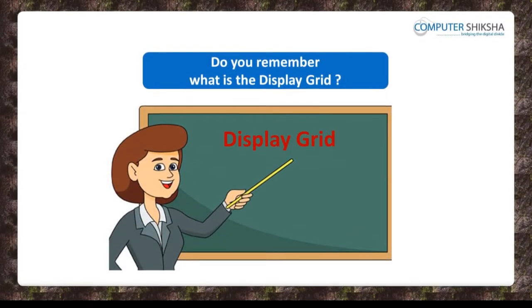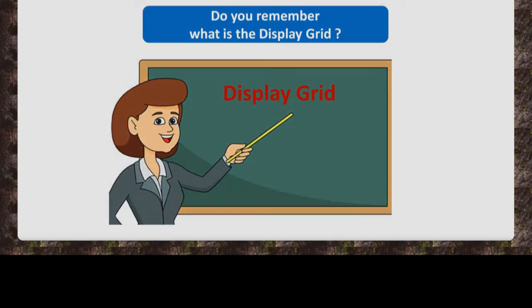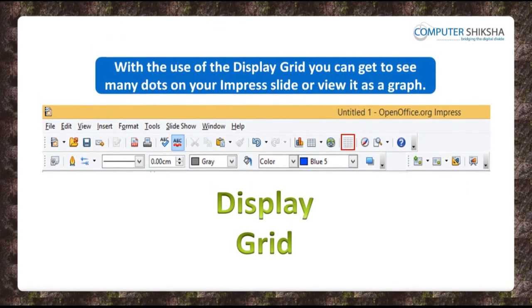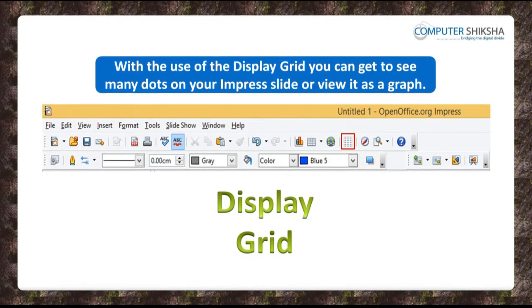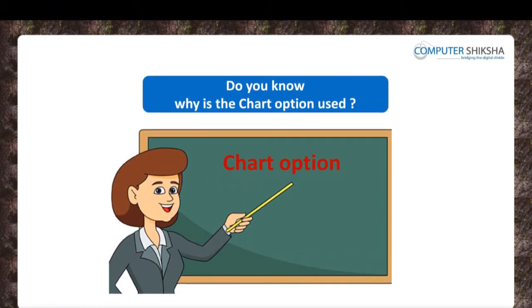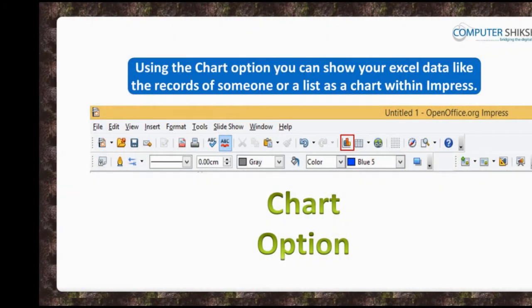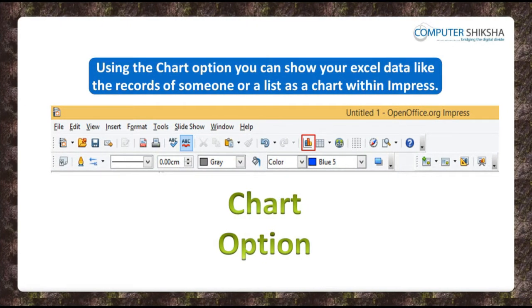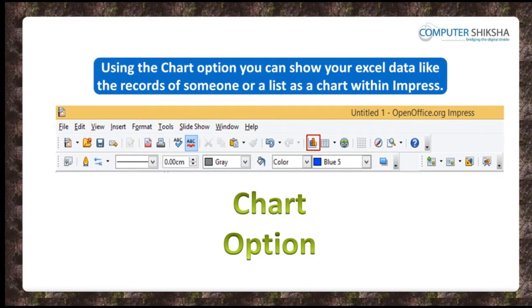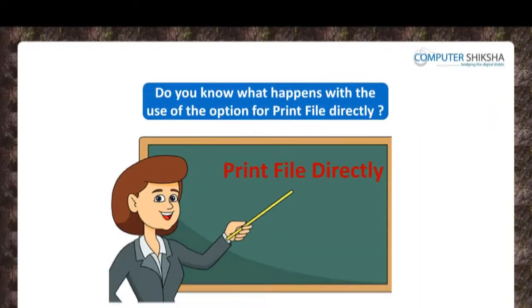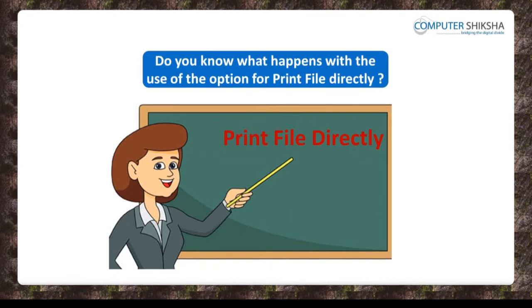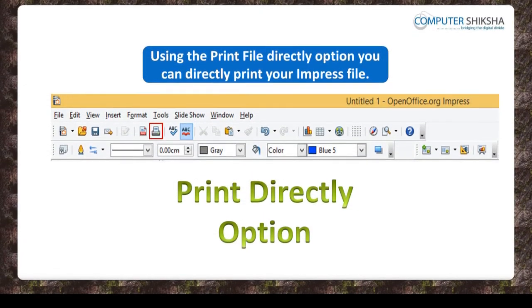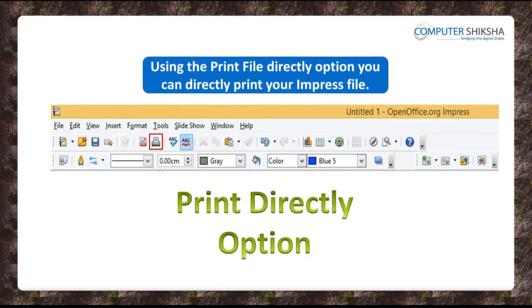Do you remember what is the display grid? With the use of the display grid, you can see many dots on your Impress slide or view it as a graph. Using the chart option, you can show your Excel data — like records or a list — as a chart within Impress. Using Print File Directly, you can directly print your Impress file.